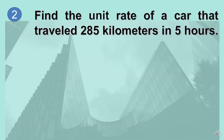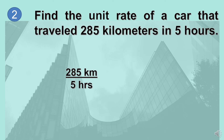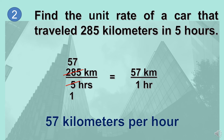Let's move on to the second example. Find the unit rate of a car that traveled 285 kilometers in 5 hours. The quantities being compared are kilometers and hours. So I have 285 kilometers all over 5 hours. Then think of a number that can divide 5 and 285, which is 5. So 5 divided by 5 gives us 1 and 285 divided by 5 gives us 57. So in fraction form, I have 57 kilometers all over 1 hour, or the unit rate is 57 kilometers per hour.